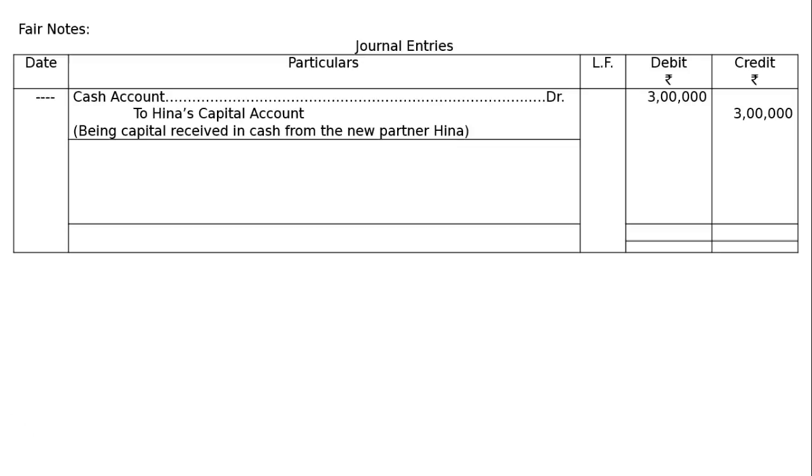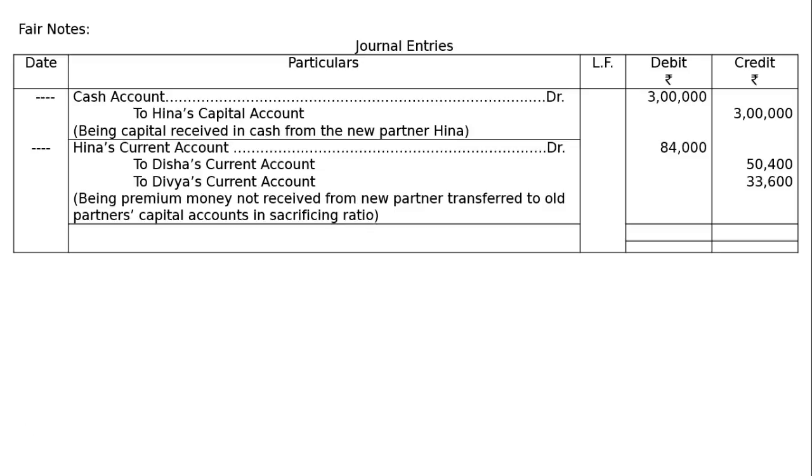Hina could not pay for her share of Goodwill in cash and the capitals are fixed. Hina's current account debited Rs. 84,000 to Disha's current account Rs. 50,400 to Dibya's current account Rs. 33,600. Being premium money not received from new partner, transferred to old partners' capital accounts in sacrificing ratio.